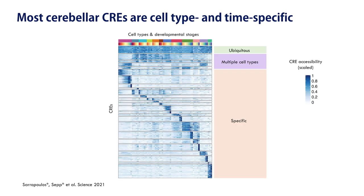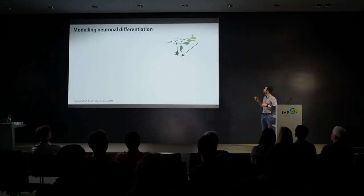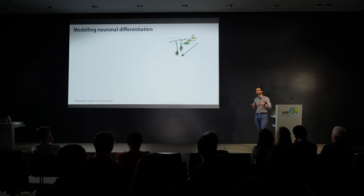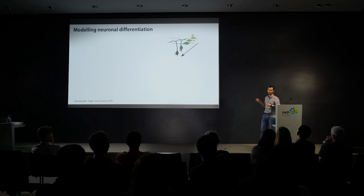Skipping the analysis on progenitor cells and cell fate specification, I'll jump to what happens after cell fate commitment. Immature neurons still have to grow an axon, migrate to their final position in the cerebellum, and form a functional synapse — collectively referred to as neuronal differentiation. The question here was: how do the chromatin accessibility profiles of these cells change during this process?